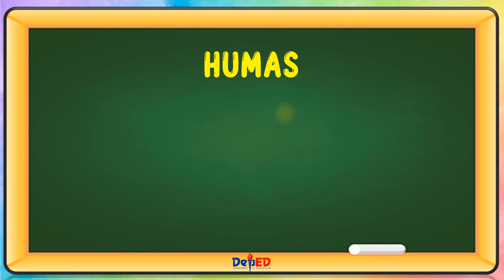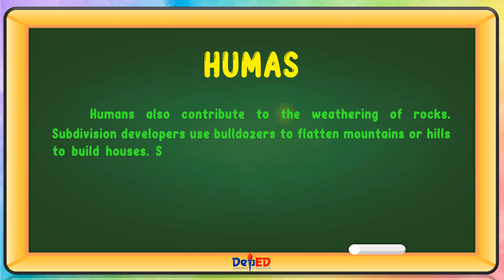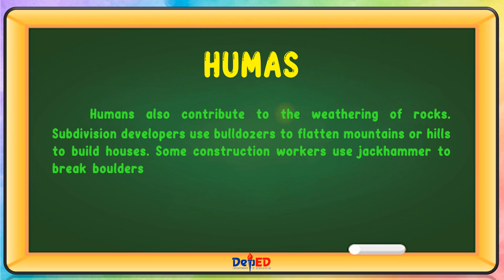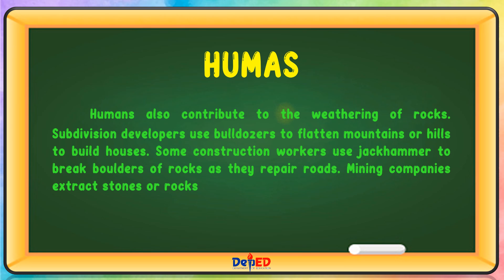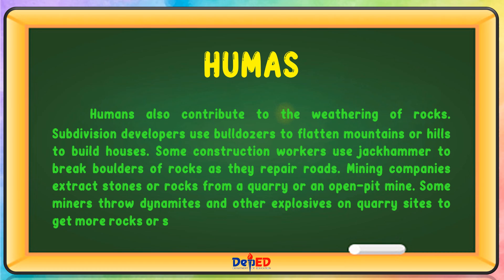Humans also contribute to the weathering of rocks. Subdivision developers use bulldozers to flatten mountains or hills to build houses. Some construction workers use jackhammers to break boulders of rocks as they repair roads. Mining companies extract stones or rocks from a quarry or an open-pit mine. Some miners throw dynamites and other explosives on quarry sites to get more rocks, which can trigger landslides.